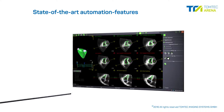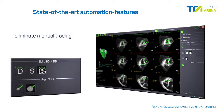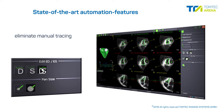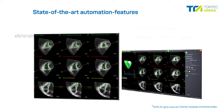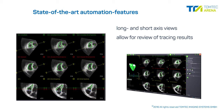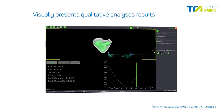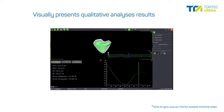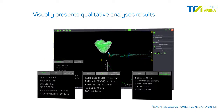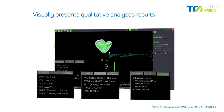State-of-the-art automation features eliminate the need for manual contour tracing and yet leave the clinical expert in control. Automatically traced endocardial contours are presented in long and short axis views and allow for a comprehensive review of tracking results. 4D RV Function visually presents qualitative analysis results next to a comprehensive set of automatically derived measurements.